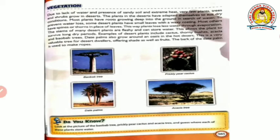Most plants have roots growing deep into the ground in search of water. In deserts, water is generally not easily found near the surface. To prevent water loss, some desert plants have small leaves with a waxy coating. Most others have spines or thorns in place of leaves. This way plants lose less water through evaporation - because for evaporation, more surface area is needed, so by minimizing surface area, evaporation decreases and they prevent water loss.